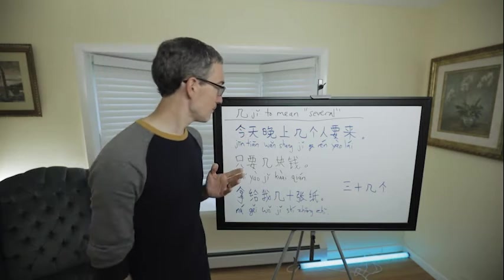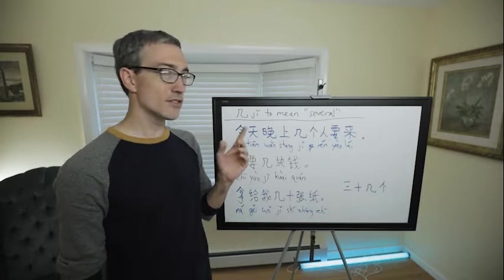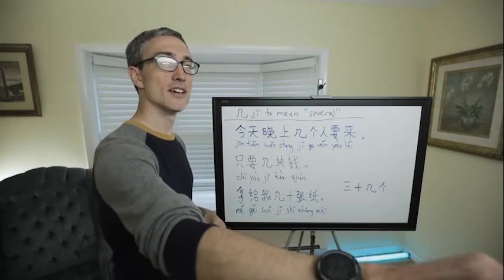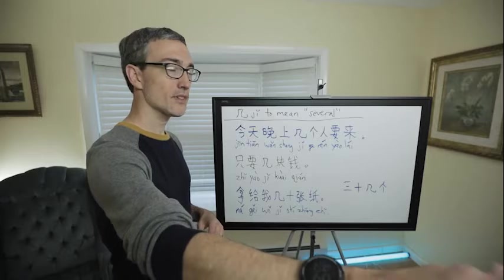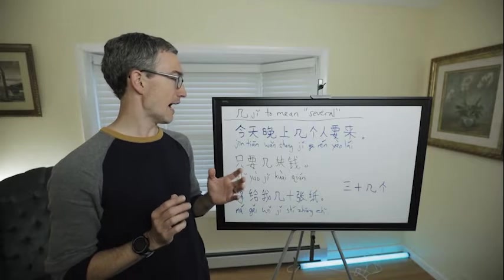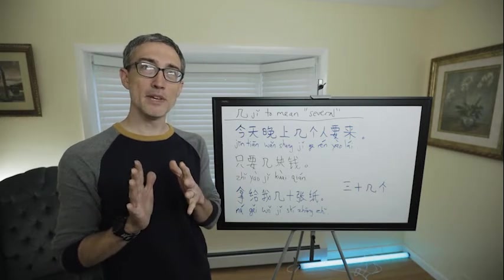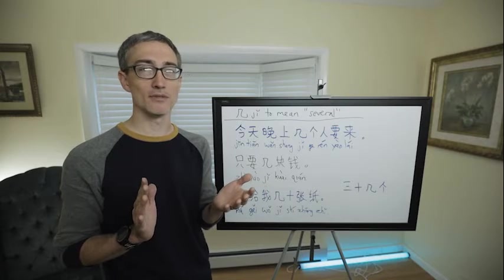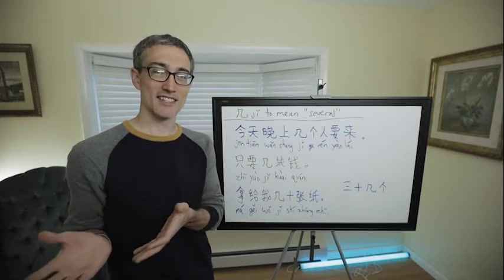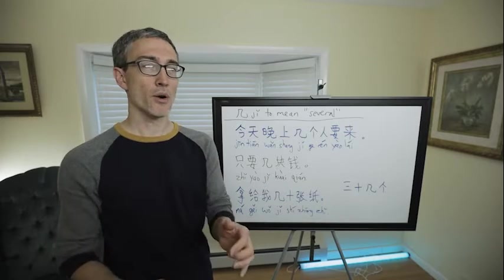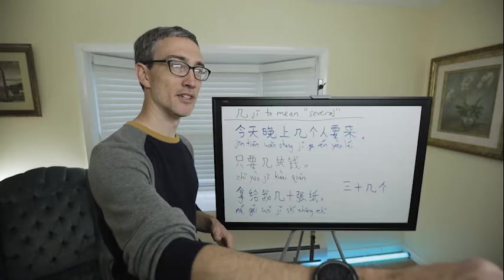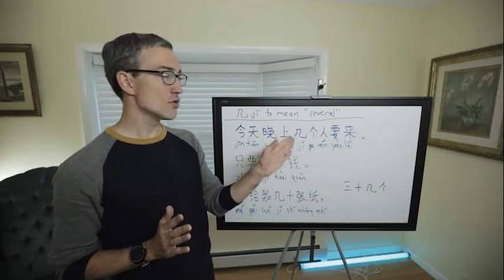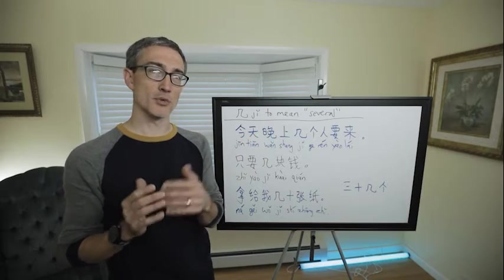But we'll start off with 几 here. Remember you know 几 as a question word meaning how many. It's generally used to mean how many when the speaker imagines a small number, usually from one to nine, or sometimes like if you're talking about time, 几点 is one to twelve, or if you're using military time maybe one to twenty-four. But anyway, 几 is used for smaller numbers generally when you're asking how many.